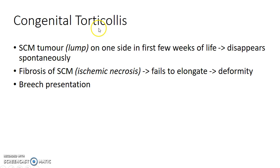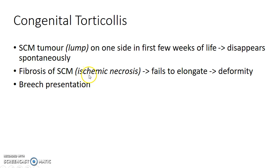Now let us see about congenital Torticollis. In congenital Torticollis, there will be a sternocleidomastoid tumor — basically a lump on one side in the first few weeks of life. This lump disappears spontaneously, but the problem is that the sternocleidomastoid tumor causes fibrosis of the sternocleidomastoid on the affected side. This fibrosis is due to ischemic necrosis. As a result of fibrosis, the fibrosed sternocleidomastoid fails to elongate, leading to Torticollis.